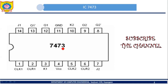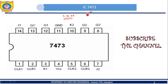In Tinkercad you will find one IC that is 7473. So what is 7473? 7473 is an IC which internally has two JK flip-flops. So inside a single 7473 IC you will find two JK flip-flops.